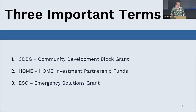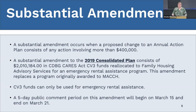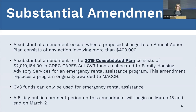Our first topic is the substantial amendment, and Alyssa is going to speak to that. I'm Alyssa Solacek and I am a city planner for the Omaha Planning Department, and I will very briefly talk about the substantial amendment. Essentially, a substantial amendment will occur when any proposed change on an annual action plan consists of any action involving more than $400,000. And so that is what we have on our agenda for tonight.